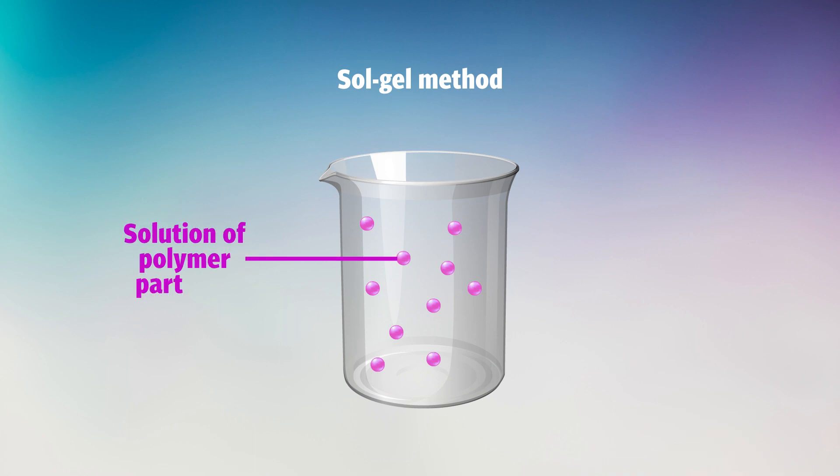The Sol-gel method is a chemical reaction that uses a solution of polymer particles to form a variety of different materials, including gels, films, and fibers.